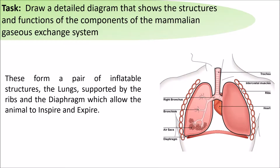These form a pair of invisible structures — the lungs — which are supported by ribs and the diaphragm, which allow the animal to inspire and expire. It's worth noting that the lungs themselves do not have any muscle tissue in them. It's the diaphragm and the ribs that cause a change in pressure within the cavity that the lungs are sitting in, which causes them to expire and inhale.